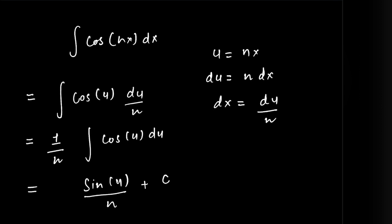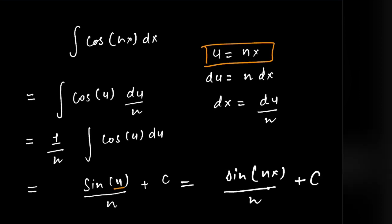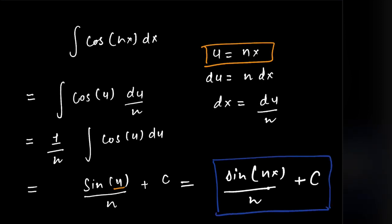Now we would be substituting the value of u, which is this, in here. So that would give us the outcome to be, or the answer to be, sine of nx divided by n plus c, which is a constant, and its value depends on the given initial values.